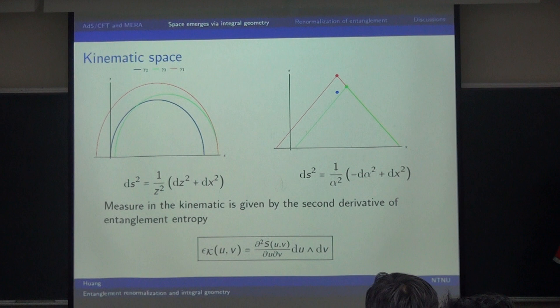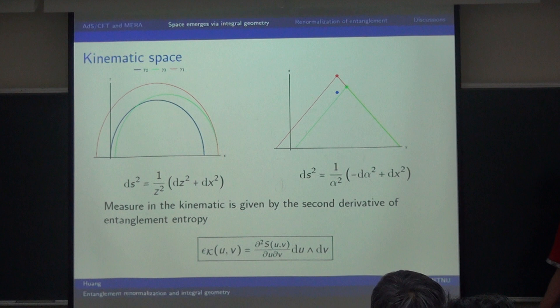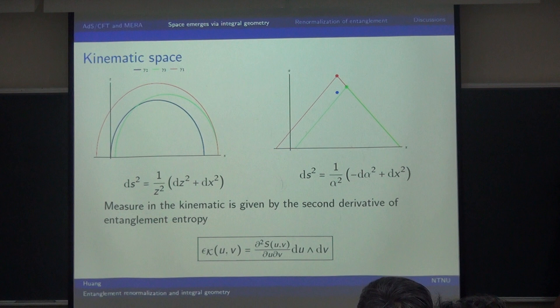You can immediately see that this expression has an entropic interpretation, because the length of the geodesic is the entropy according to the RT formula, and this quantity can be computed from the boundary. So the boundary entanglement entropy can determine the geometry in the kinematic space.